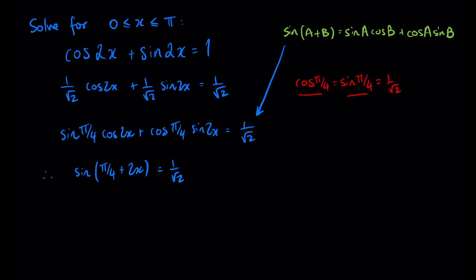Before we proceed to find the solutions, let's first adjust our domain. The original domain was 0 to π, so the domain for 2x plus π on 4 is going to be π on 4 to 2π plus π on 4.